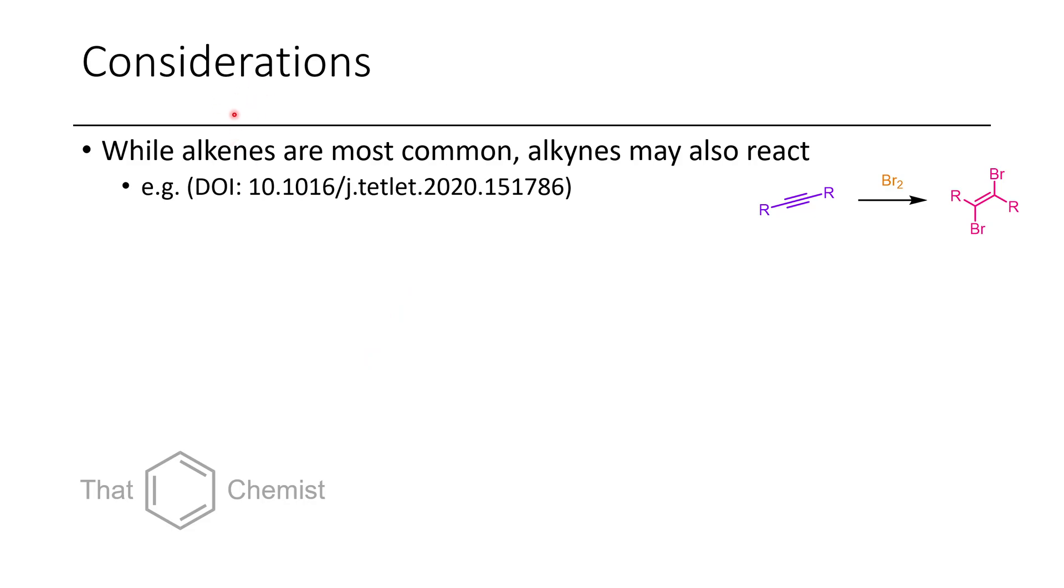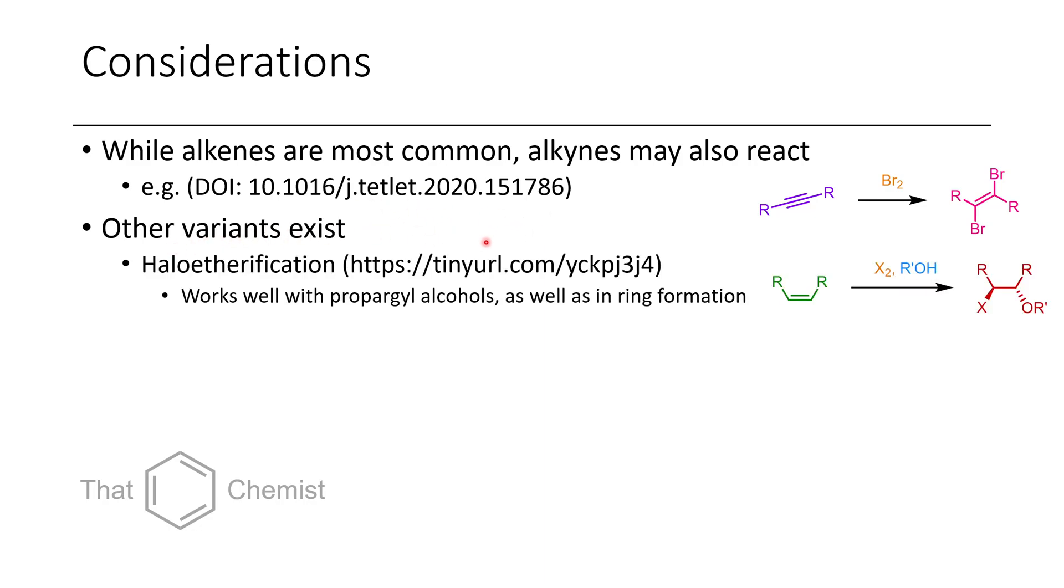So some considerations for these reactions include, you could also use alkynes. So here you can see an alkyne reacts with bromine to form this 1,2 opposite alkene. So this would be entgegen. Now if you want to see an example of this, there's a total synthesis paper where they do this on a substrate.